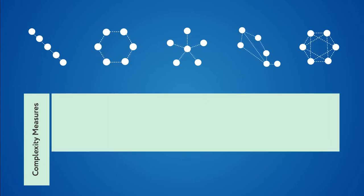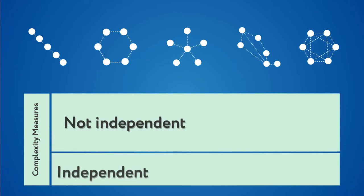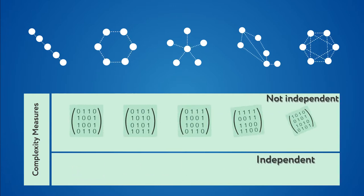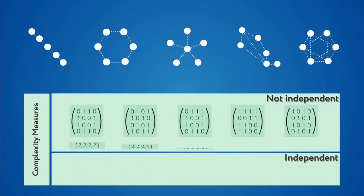However, most measures are not independent of the different ways in which objects can be described. A network, for example, can be described by its adjacency matrix or by its degree sequence.